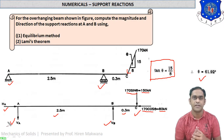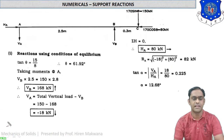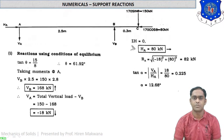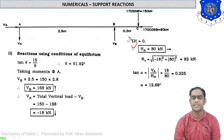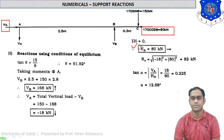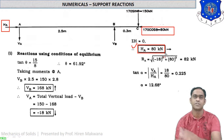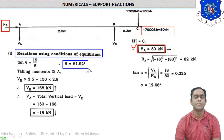Now applying the equilibrium method: starting with sigma H = 0, which means rightward forces equal leftward forces. The rightward force is HA and the leftward force is 80 kN, so HA = 80 kN. That completes the calculation for horizontal forces.